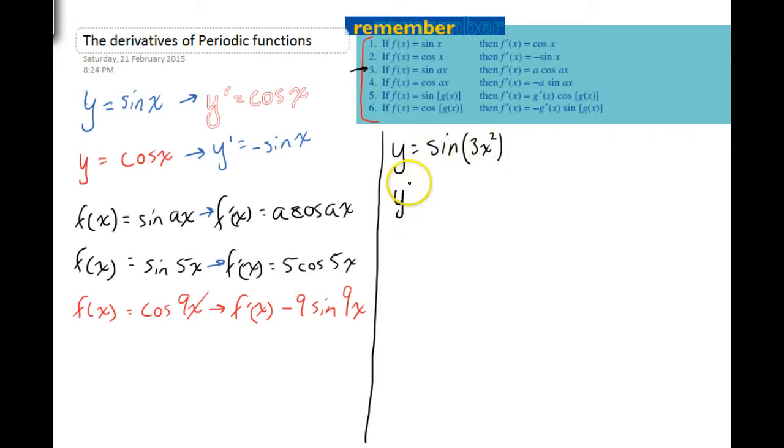So if y equals sine 3x squared, that means that y dash, the derivative, equals the derivative of whatever is in here, which is 6x. Now this is sine, so the derivative is going to be cos. And then whatever was originally in there, 3x squared. Might just do a couple of them so you can see them in action.